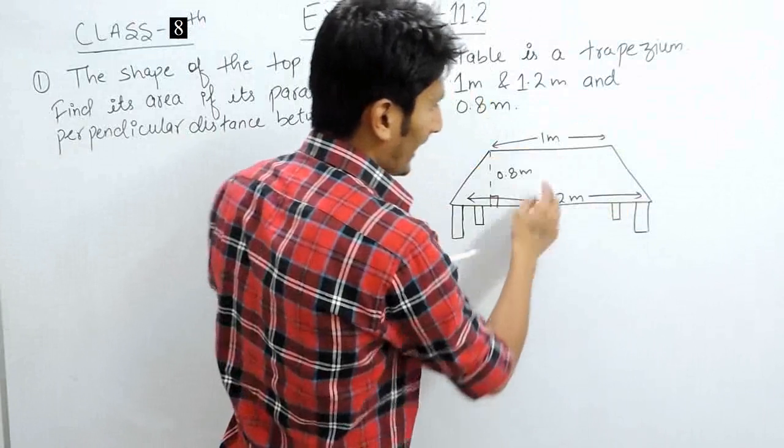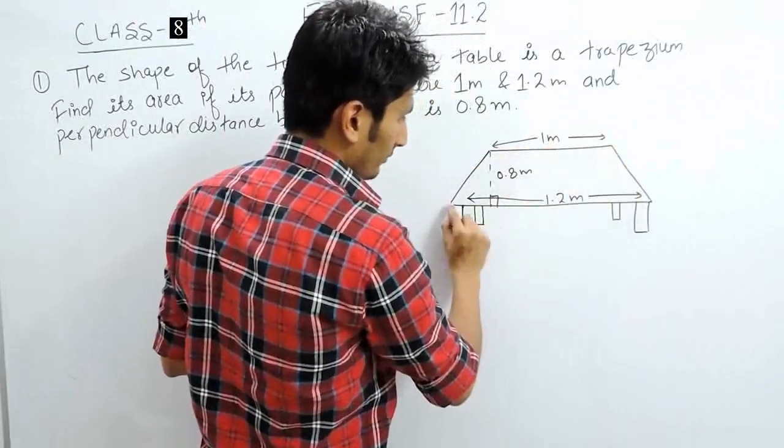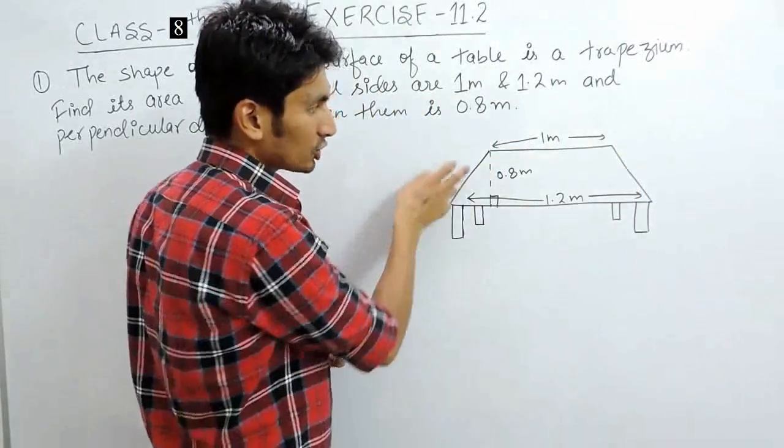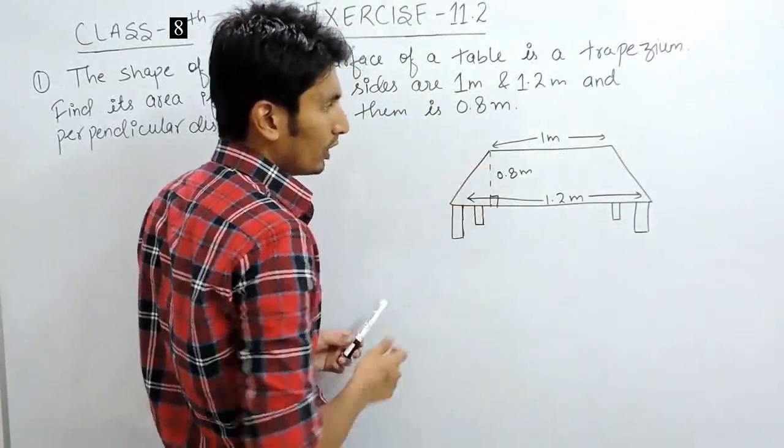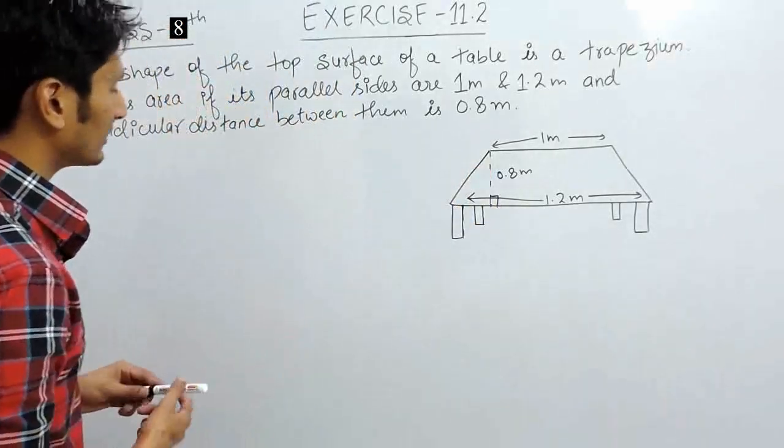These two sides are parallel and the measurement of these are given as 1 meter and 1.2 meter, and the perpendicular distance which is the shortest distance between these two is given as 0.8 meter. You have to find the area of the surface.